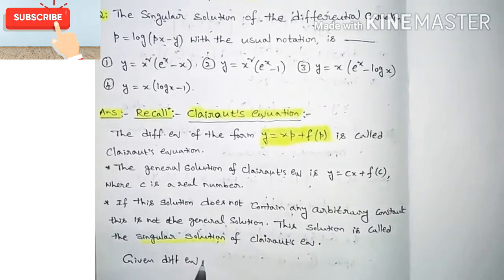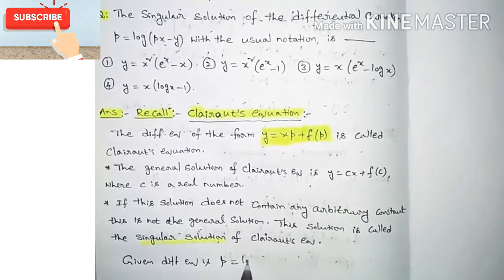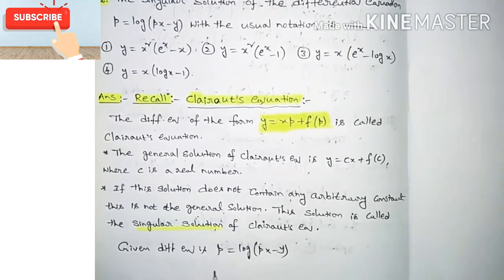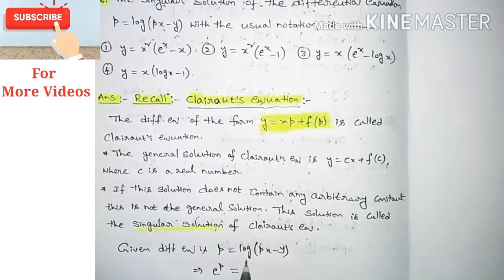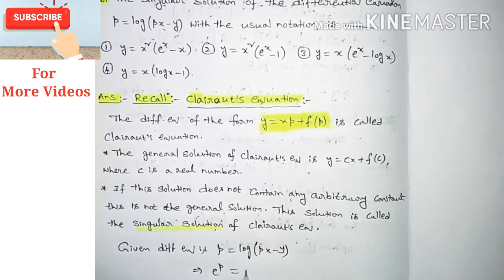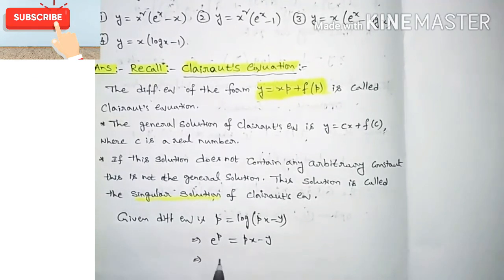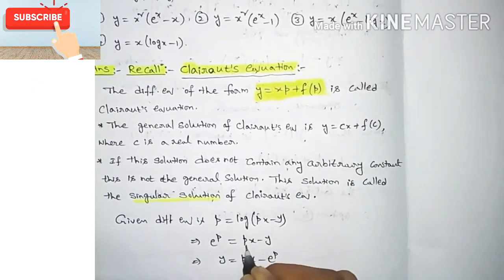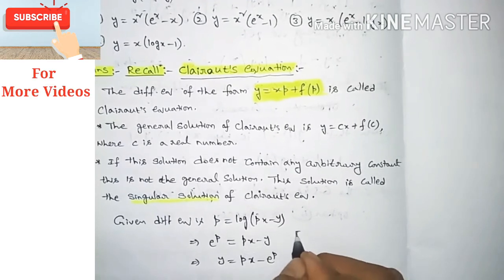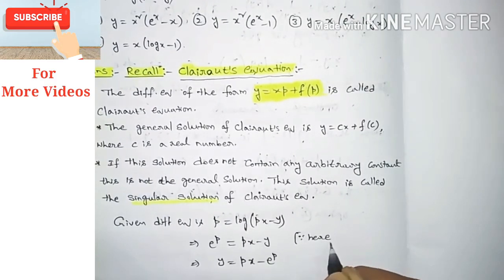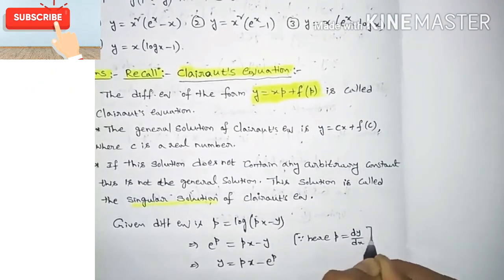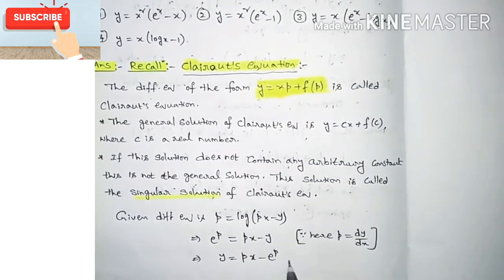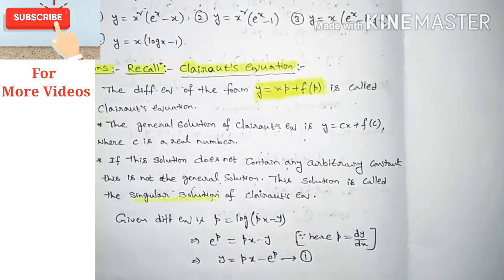The given differential equation is p = log(px − y). Taking exponentials on both sides we get e^p = e^(log(px − y)) = px − y. From this we get y = px − e^p. Note that the notation p = dy/dx, the derivative of y with respect to x. Let this be equation number one.